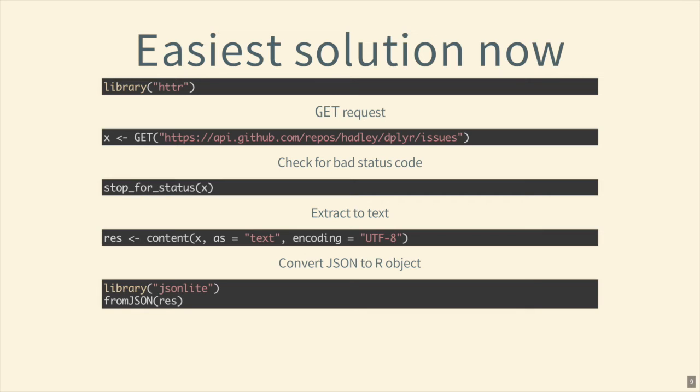That was the easiest way to make an HTTP request right now. The GitHub API allows unauthenticated requests but with a very low rate limit — I think it's 60 requests per hour or per 10 minutes — but you can easily add authentication.